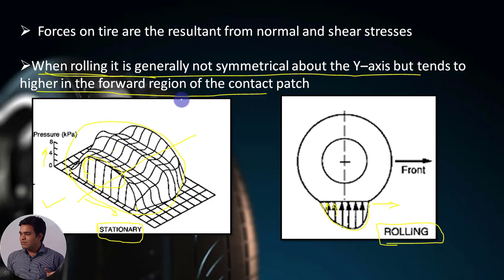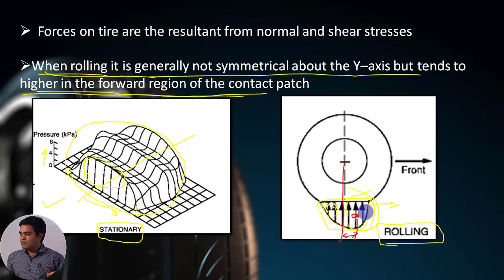The pressure distribution tends to be higher in the forward region of the contact patch. The center of this phenomenon will not lie on the axis of rotation — the center will be offset. Due to this offset generated between the axis of rotation and the center of the moment generated by the forces, it will not be zero and it will create a rolling resistance. If the centroid lies on the lateral axis, then the rolling resistance will be zero.